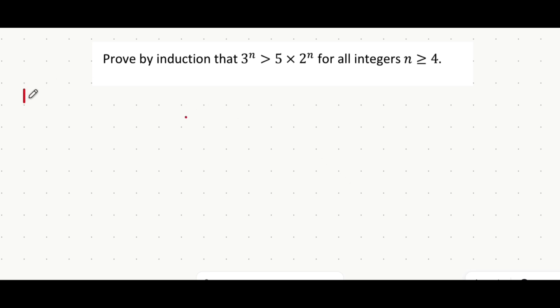So step number 1 as always is to show the initial case is true. For the initial case we choose the smallest number that n could be. In this case n equals 4 is the smallest of our options. And we show that when n equals 4 both sides of the equation satisfy this inequality. So let's do that.